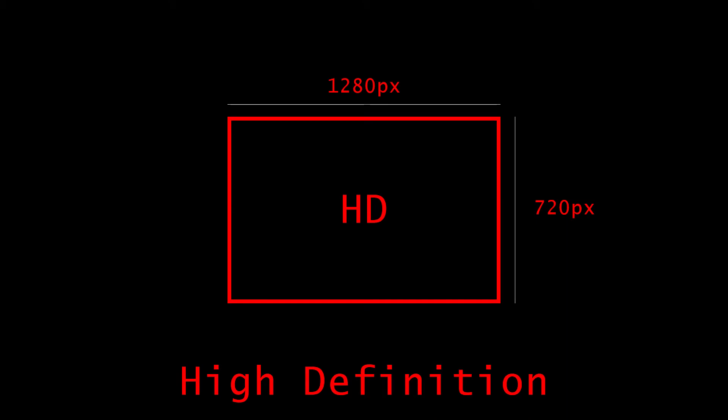Now original high definition — this is 720p, what you see when you click 720p on YouTube. It is 1280 pixels going horizontal by 720 going vertical. It has more information, more depth, and more detail than standard definition.